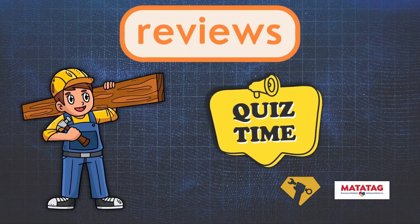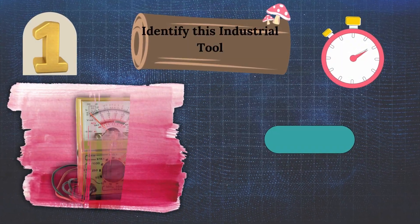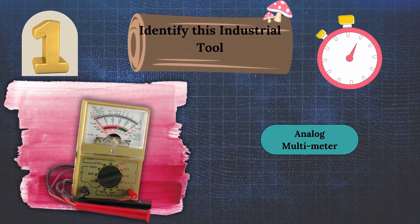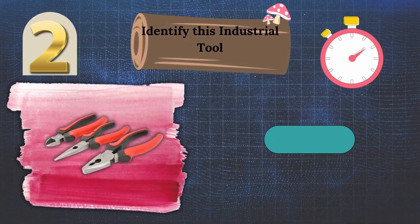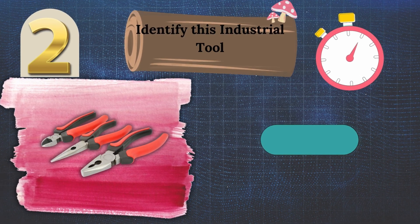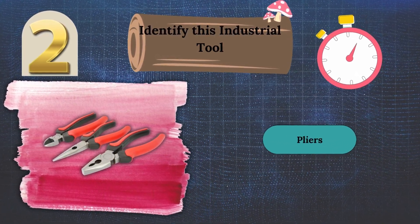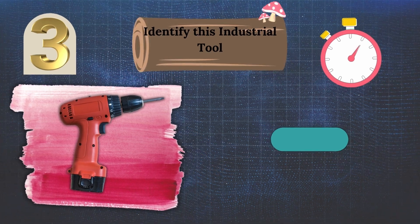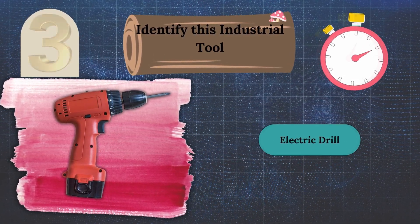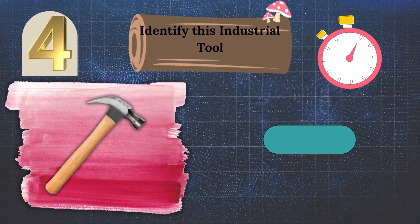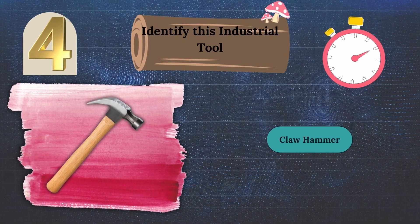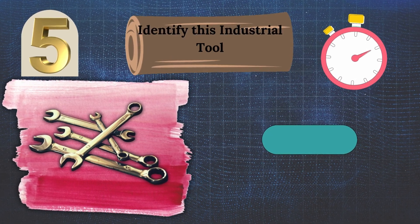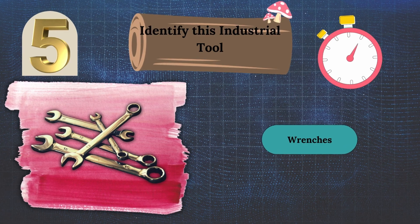This time, we are going to identify what industrial tool is shown on the screen. Number one — very good, analog multimeter is correct. Number two — very good, pliers are correct. Number three — very good, electric drill is correct. Number four — very good, claw hammer is correct. Number five — very good, wrenches are correct.